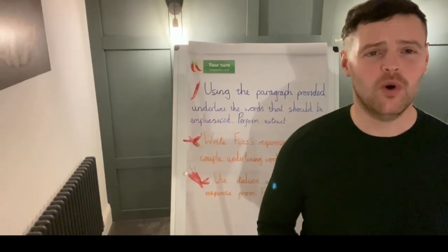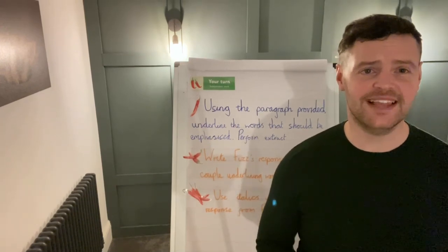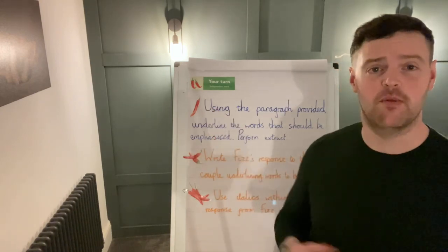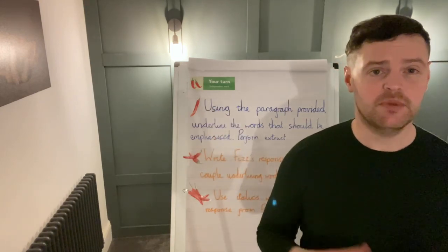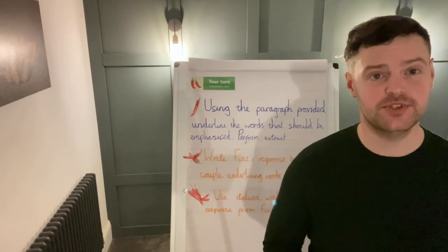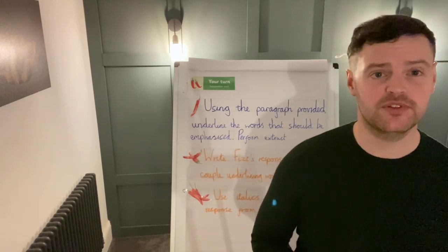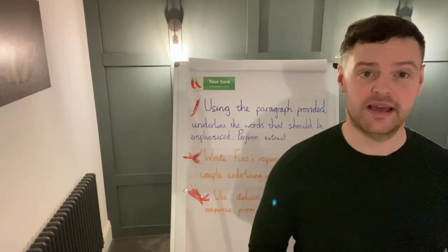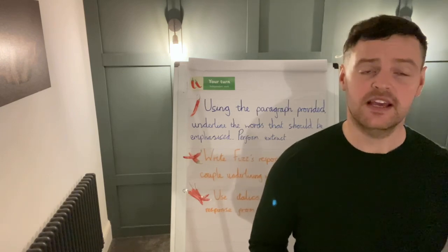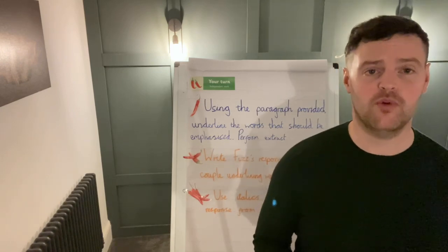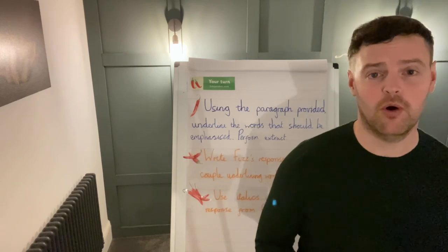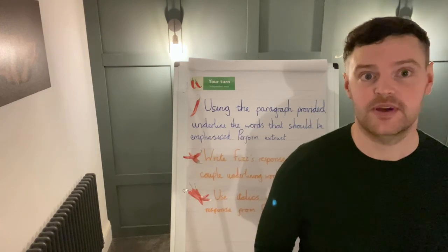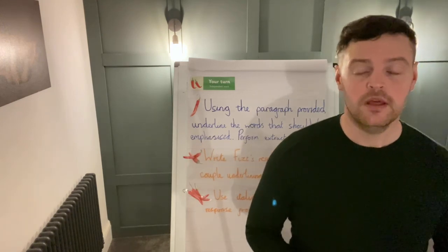Wow, what a nasty piece of work that old lady is! What a dilemma Fizz is in now. But we're going to use that dilemma in order to inform our independent work today, because your task is to produce or annotate a response from Fizzlebert to the old couple, all about that dilemma that they have put him in. So he's got a decision to make — whether to go with them, go along with what they say, or stand up for himself a little bit more, but then run the risk of getting into trouble at the library as they're lying to him.